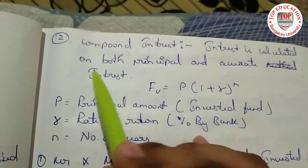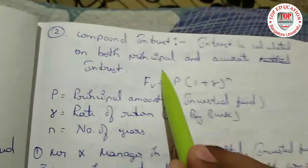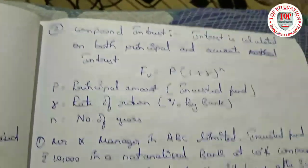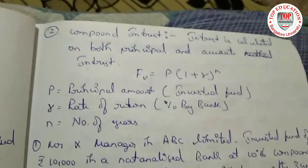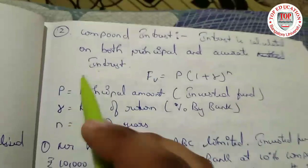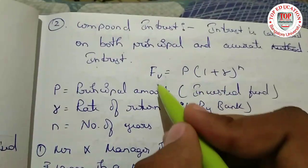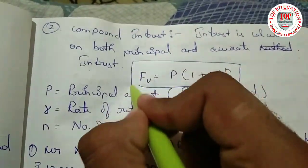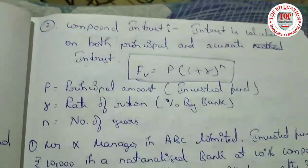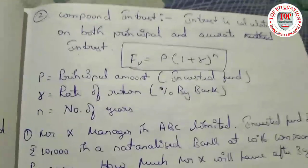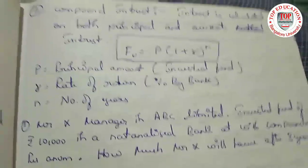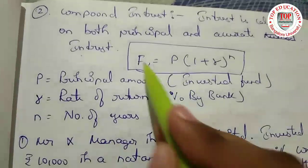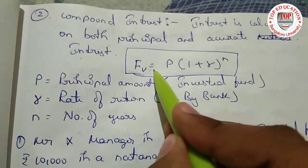In compound interest, interest is calculated on both the principal amount and the accrued interest. Here we have the formula — write it down. Don't forget this formula because it is very important.